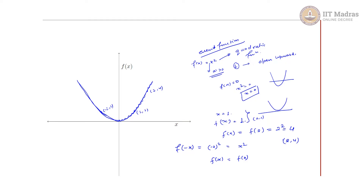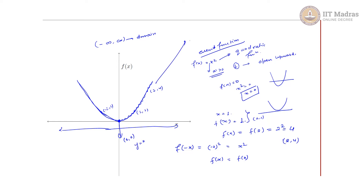The domain of x squared is from negative infinity to infinity. For the range, the vertex at (0, 0) gives the minimum value of y = 0, and the end behavior shows that as x goes to infinity, f(x) goes to infinity. So the range is [0, positive infinity).